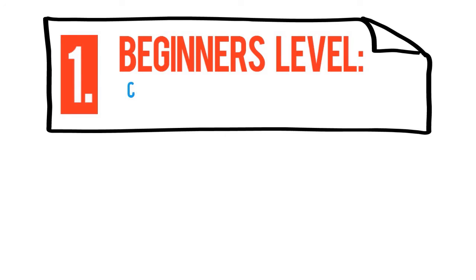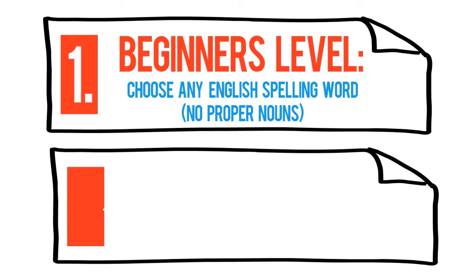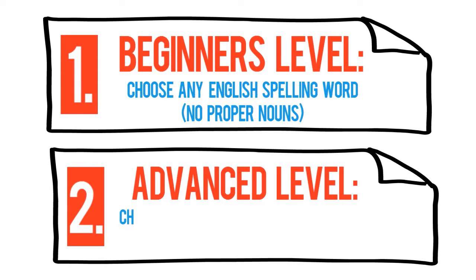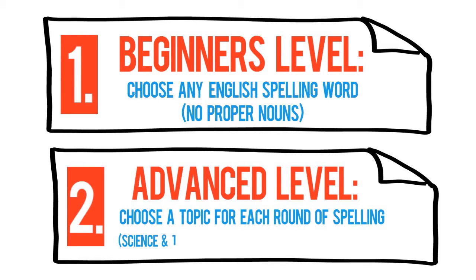There are two levels. At the Beginner's level, players can choose any English spelling word, no proper nouns. At the Advanced level, players can choose a topic for each round of spelling, such as science and technology, geography, or general words.